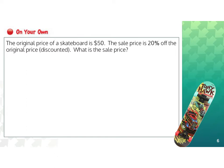Here's the first example for you to try on your own. The original price of a skateboard is $50. The sale price is 20% off the original price. What is the sale price? Take a minute right now to determine the sale price before you continue with the rest of the presentation.